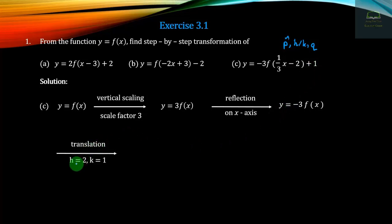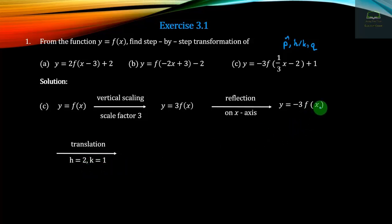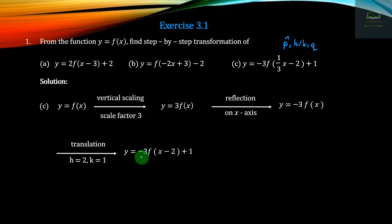Then translation, h squared 2, k squared 1. If it's done, h equals 2 plus 2 — the result is 2. Then minus 3 equals 4, x minus 2. Then y equals 2. Y equals minus 3; minus 3 equals 4 and x equals 2.